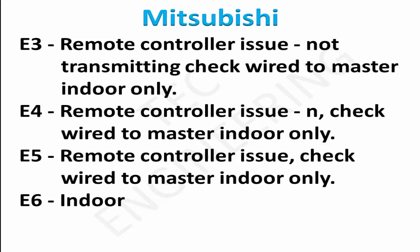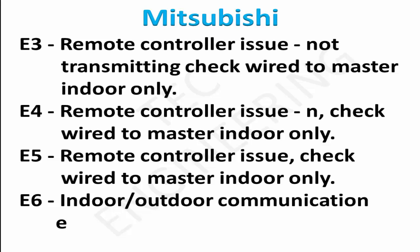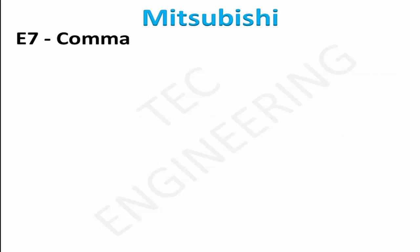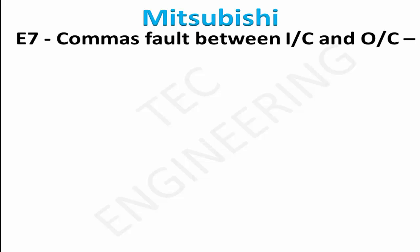E6: indoor to outdoor communication error. E7: comms fault between indoor coil and outdoor coil — check for condensate pump type, seat reset.